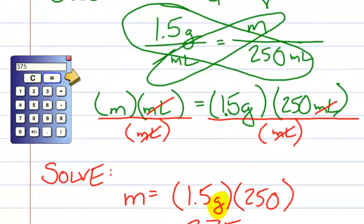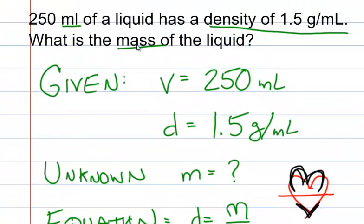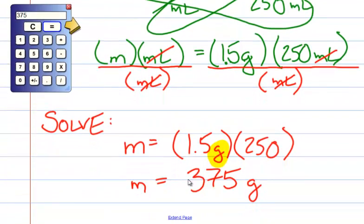Now let's give ourselves a sanity check. It asked us to find the mass of the liquid. Grams is a unit of mass, so we solved the problem correctly.